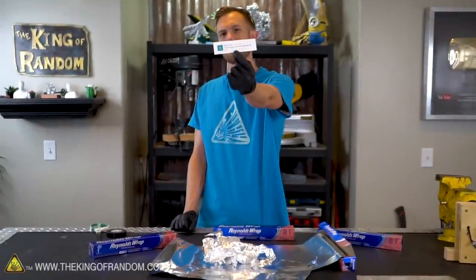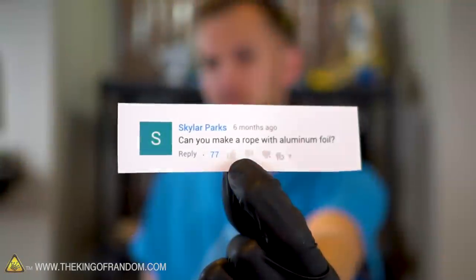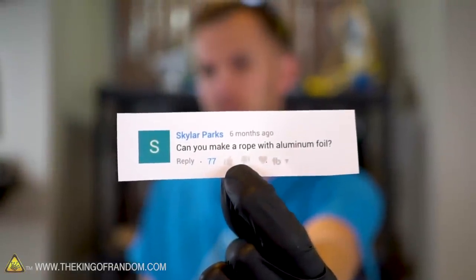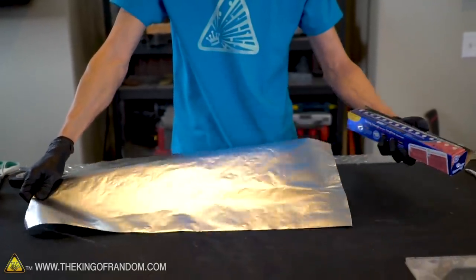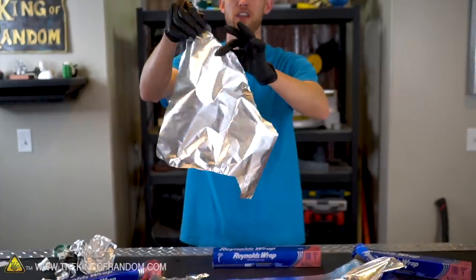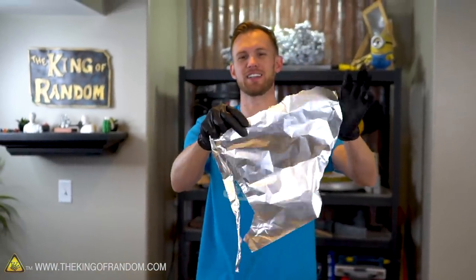On YouTube, Skylar Parks asked if we can make a rope using aluminum foil. Skylar, that's an interesting question. As most people know, aluminum foil is not terribly strong. It's made of metal, but it's so thin that it shreds apart easily.